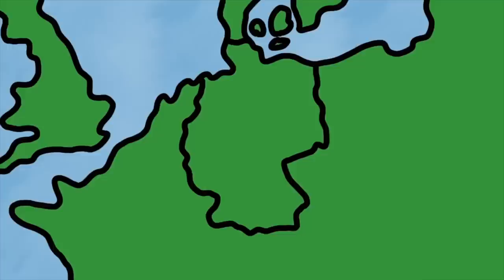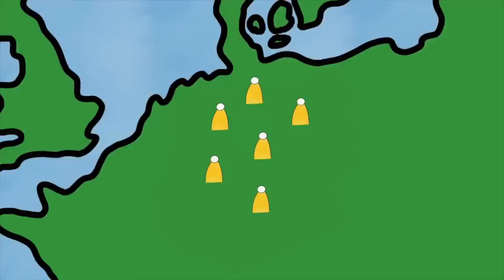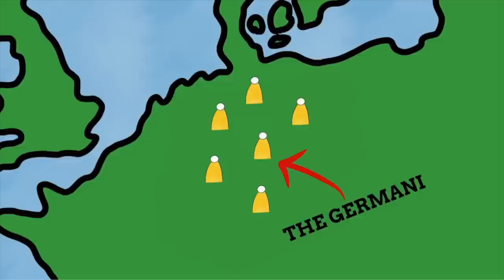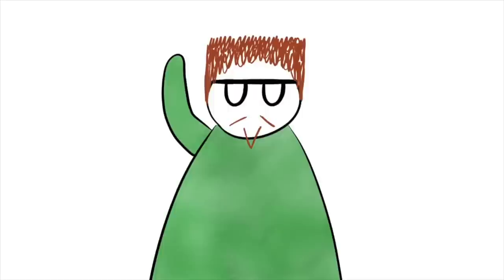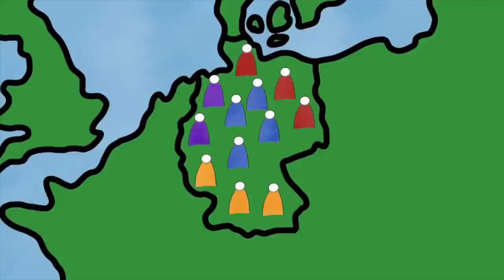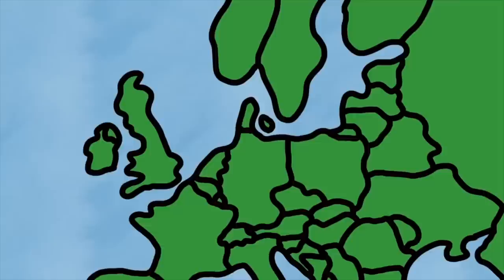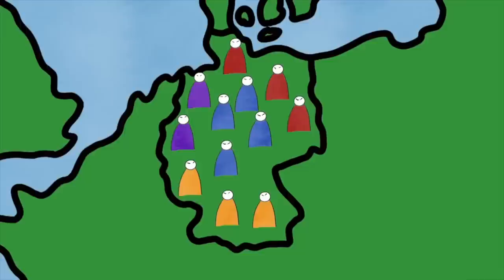We have the Romans to thank for the name Germany — none other than Julius Caesar himself. In his writings he spoke of a tribal people he called the Germani, who resided in modern-day Germany, and the Romans dubbed their land Germania, which transformed into Germany. However, different outsiders gave the land different names depending on which Germanic tribe they encountered most — the French dealt with the Alamanni tribe so called the country Allemagne, while Finnish speakers named it Saksa after the Saxons. The actual people of the land simply named it after their word for 'of the people' — Diutisc — which eventually evolved into the German name Deutschland.